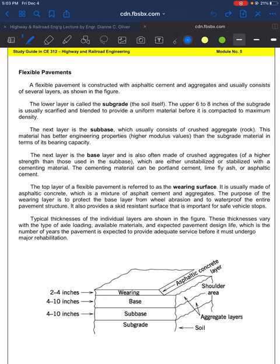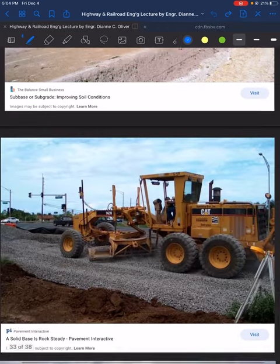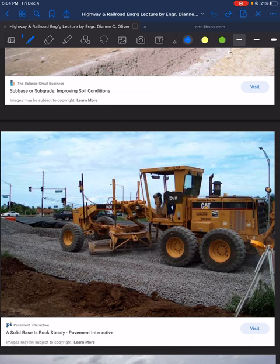After the subgrade, we have the subbase. Above the subgrade is the subbase, which usually consists of crushed aggregate or rocks. This material has better engineering properties or higher modulus values than the subgrade material in terms of its bearing capacity. Here, crushed aggregate is being laid on the prepared subgrade.